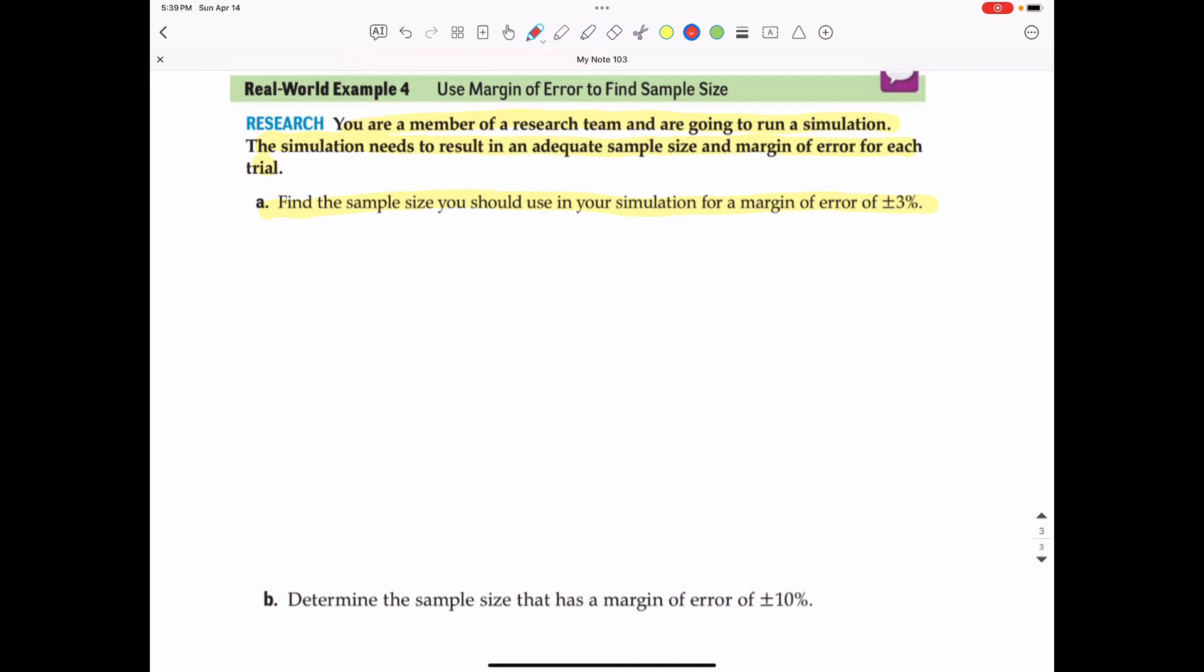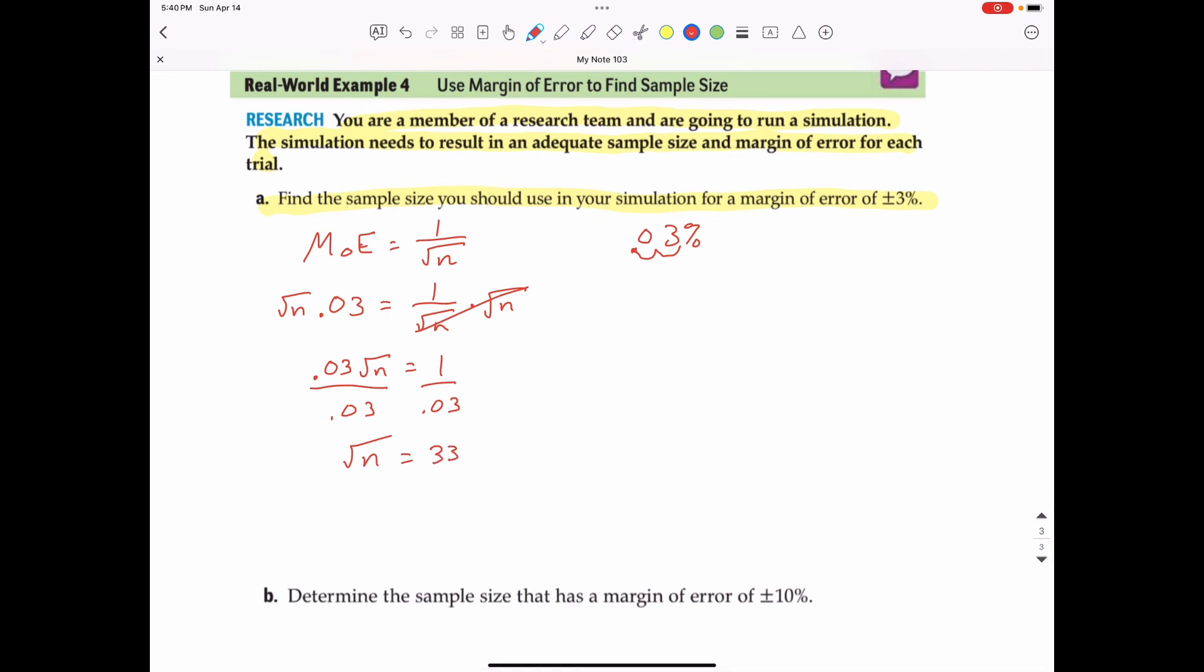Since margin of error is 1 divided by the square root of n, and we want a margin of error plus or minus 3 percent, that is .03 as a decimal. So .03 equals 1 over the square root of n, and we're trying to solve for n. To solve for n, I'm going to multiply both sides times the square root of n. This will eliminate the fractions. So that will give me .03 times the square root of n equals 1. I will divide both sides by the .03, and that will give me the square root of n equals 1 divided by .03, and that equals 33.3 repeating.